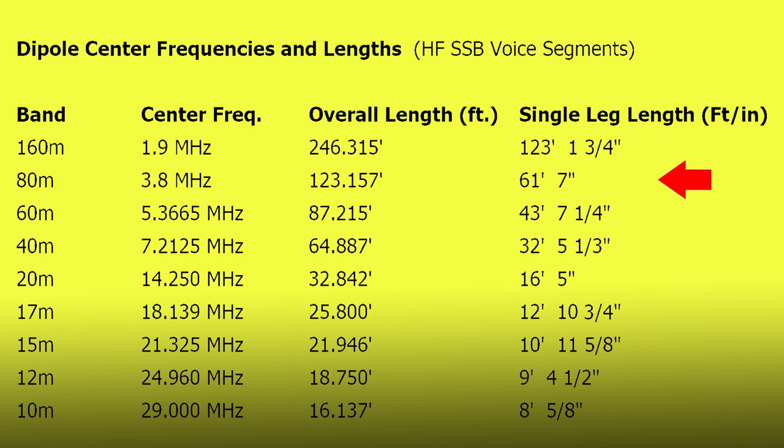If we use 80 meters, 3.8 megahertz, the total overall length is 123.157 feet, or 61.7 feet per leg. Now I always add about 5%, so in this case we'd use about 65 feet for starters. We can always shorten it up. It's a little bit more difficult to lengthen it.